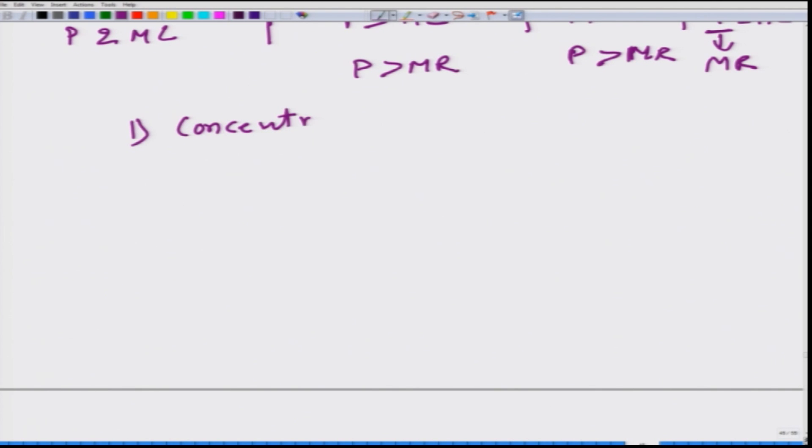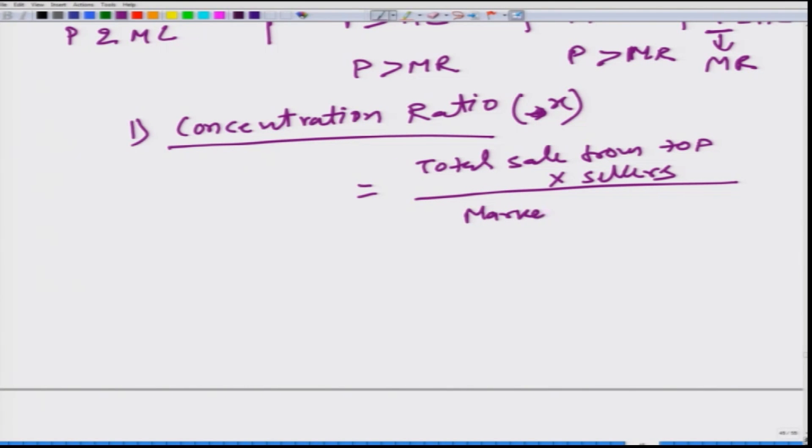The first one is concentration ratio. And concentration ratio basically what it does, it measures the sales. We can say that concentration ratio, let me put here x, because x is the number of firms that we would take to calculate the concentration ratio. It is the total sales from top x sellers divided by total market sales. This is the concentration ratio. One example of concentration ratio would be that x is equal to 4. This is called 4CR. What we do here, total sales from top 4 sellers divided by total market sales.